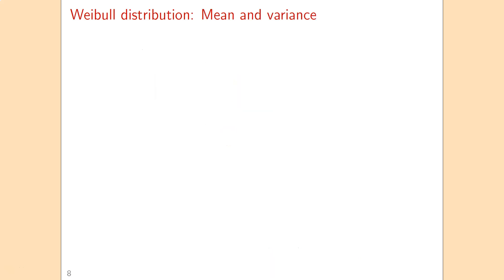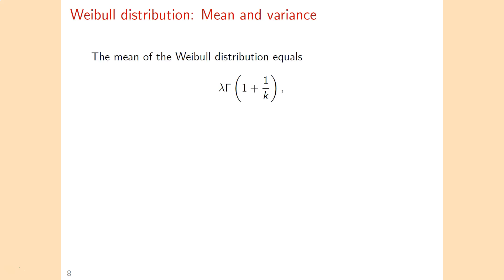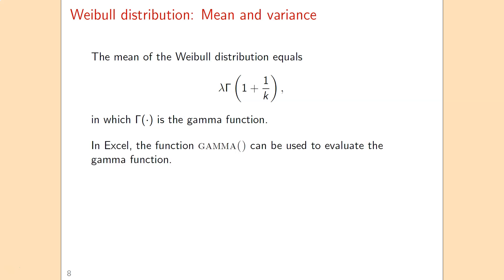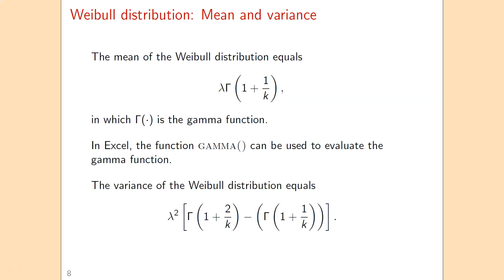If a unit follows a Weibull lifetime distribution, the mean of that Weibull distribution is the mean time between failures. That mean is given by lambda multiplied by the gamma function evaluated at the point 1 plus 1 over k. In Excel, we have the gamma function available to easily evaluate it. There is also a mathematical expression for the variance of the Weibull distribution that can be used for calculation.